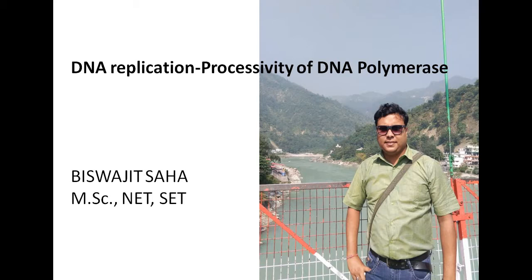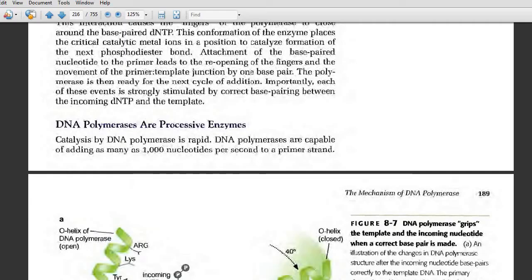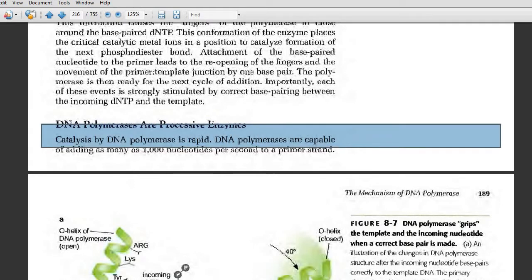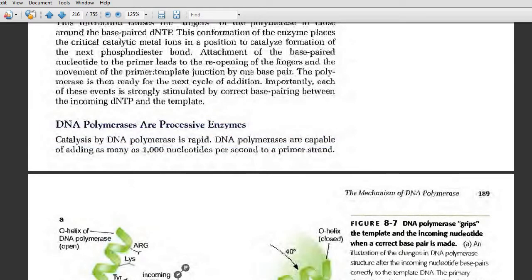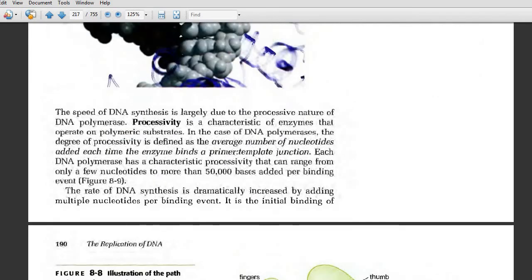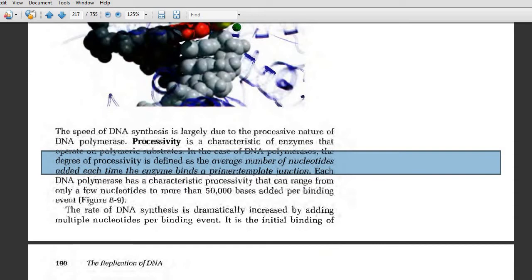Welcome to another video tutorial. In this video, we are going to describe the processivity of DNA polymerase. This is one of the vital topics for DNA polymerase, because in order to replicate DNA, DNA polymerase must be highly processive. Processivity means how many nucleotides the DNA polymerase can add after it has bound to a particular primer-template junction.